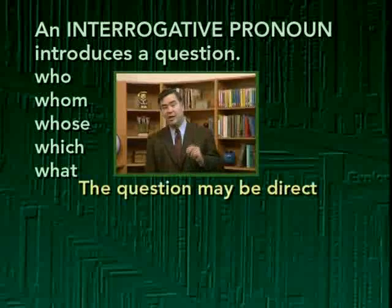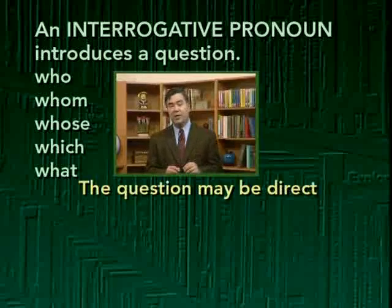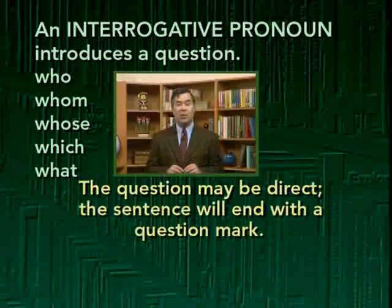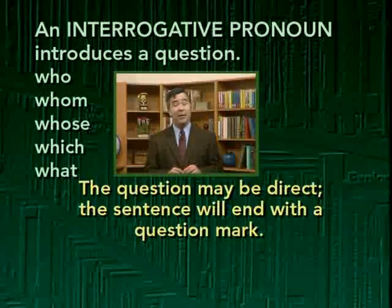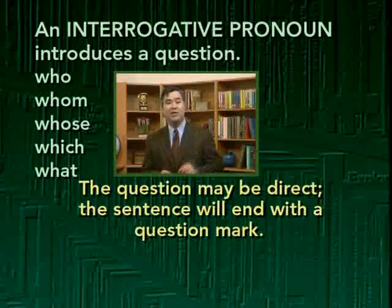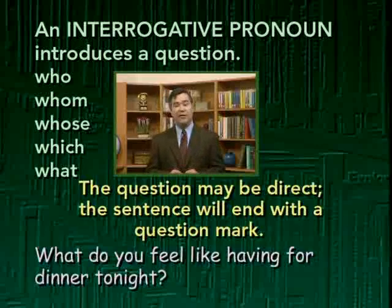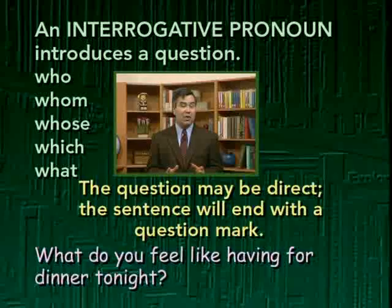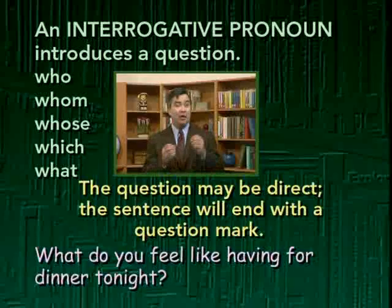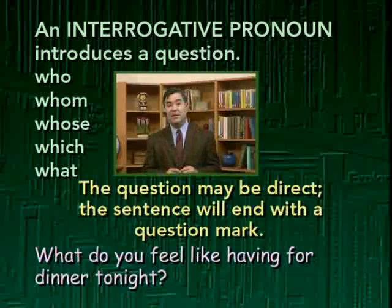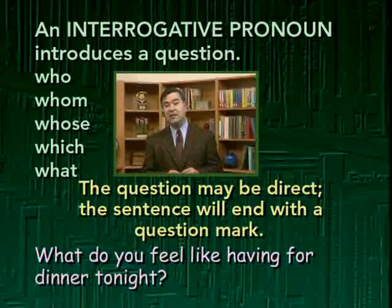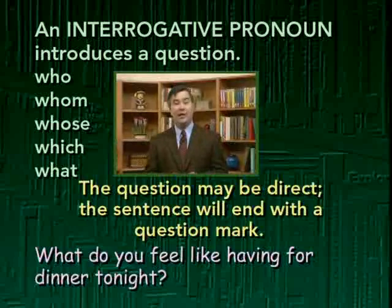The question that an interrogative pronoun introduces may be a direct question, in which case the sentence ends with a question mark and the question is asked directly of the listener. Here's an example: 'What do you feel like having for dinner tonight?' The sentence ends with a question mark, and it begins with the interrogative pronoun what.